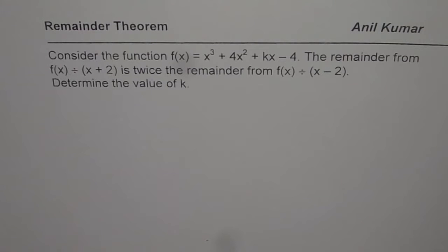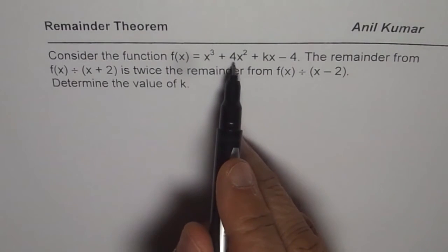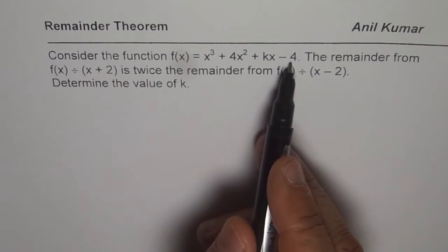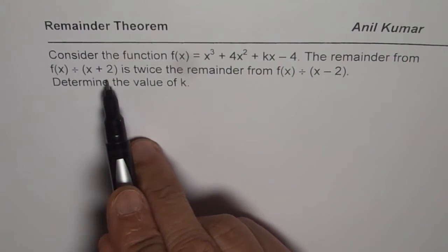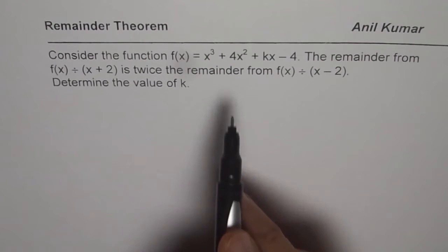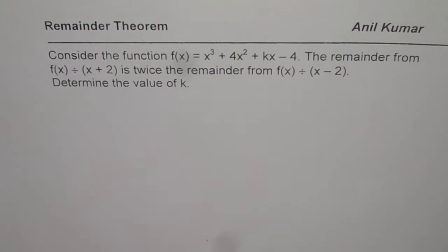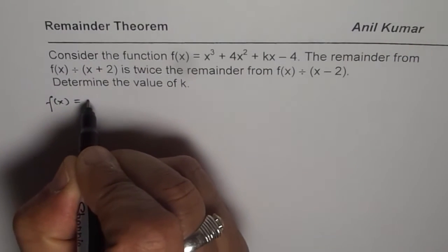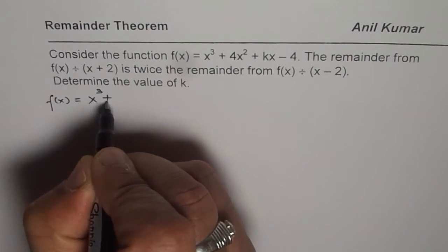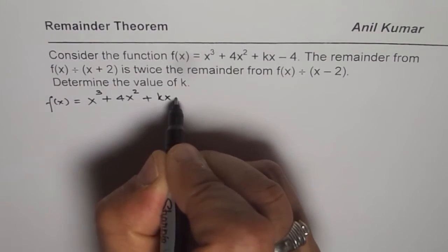I'm Anil Kumar and here is the test question on remainder theorem. Consider the function f(x) equals x cubed plus 4x squared plus kx minus 4. The remainder from f(x) divided by x plus 2 is twice the remainder from f(x) divided by x minus 2. Determine the value of k. So what we are given here is f(x) equals x cubed plus 4x squared plus kx minus 4.